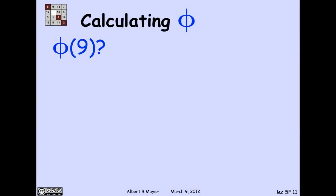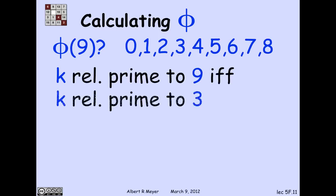Let's look at a more important example or illustrative example, namely phi of 9. So there are the candidate numbers from 0 through 8. And which ones are relatively prime to 9? Well, it's relatively prime to 9 if and only if it's relatively prime to 3.